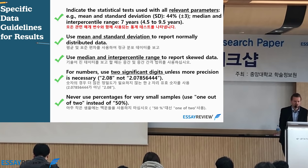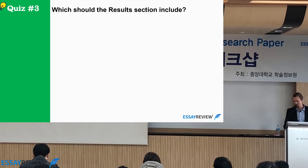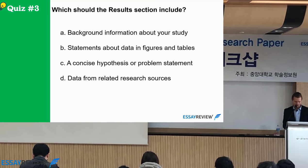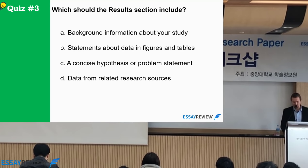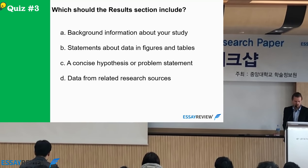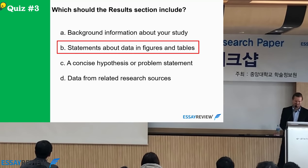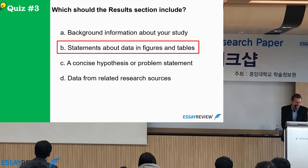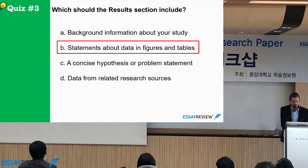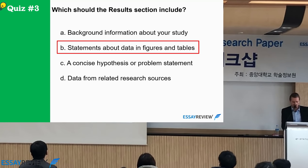Quiz: what should the results section include? A, background information about your study; B, statements about data, figures, and tables; C, a concise hypothesis or problem statement; D, data from related research sources. The answer is B — statements about data, figures, and tables. Your data in the figures and tables are the results written as sentences in the order so the reader understands. That's all it is.